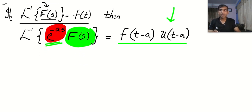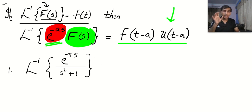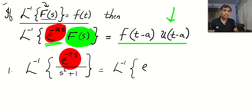Let me show you one question. Find the Laplace inverse of e to the power minus π·s divided by s squared plus 1. I can clearly see the e to the power term — this e to the power minus π·s tells me I have to apply the inverted version of the second shifting theorem. So I am going to write this as e to the power minus π·s multiplied by 1 divided by s squared plus 1.